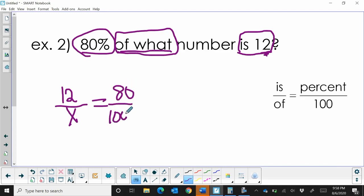And again, we're going to cross multiply. So 12 times 100 is equal to 80 times x.